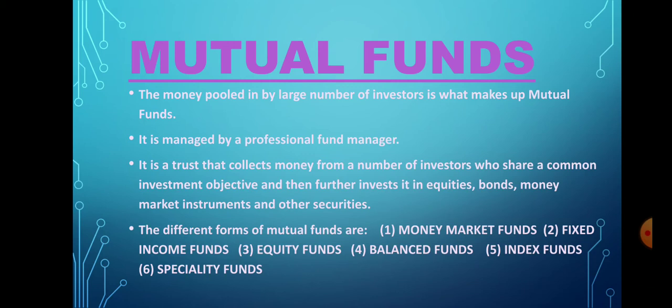All investors interested in mutual funds pool their money, which is then invested in equities, bonds, and different money market instruments — I have made a separate video on money market instruments, you can go through it — or any form of security the company is offering. The different kinds and forms of mutual funds: the first is money market funds, which are involved in short-term fixed income securities like government bonds, treasury bills, commercial papers, and certificates of deposit. These are safe because they are government-regulated, but their return is quite low.